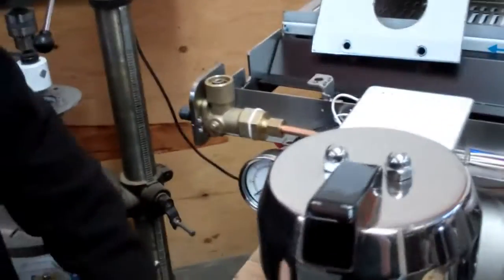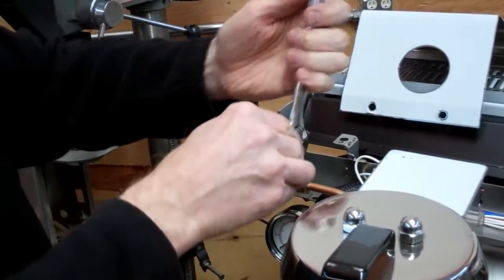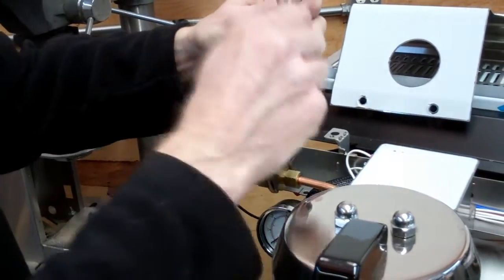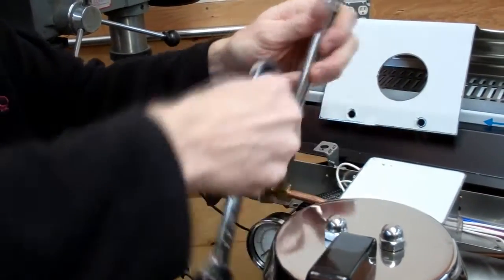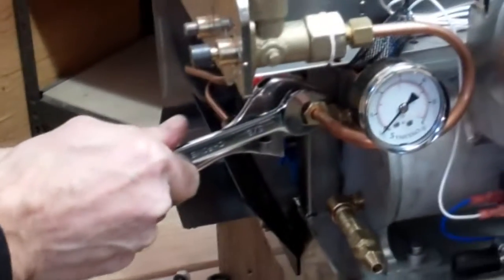With the steam wand removed, we'll remove the steam valve tube. And we'll only loosen the tube here, we don't need to take it all the way off, but just take it loose.